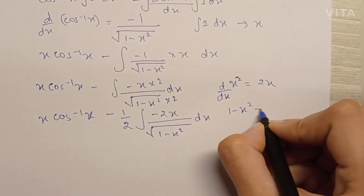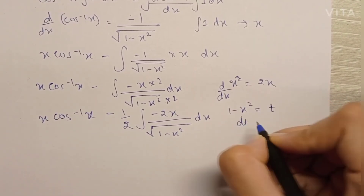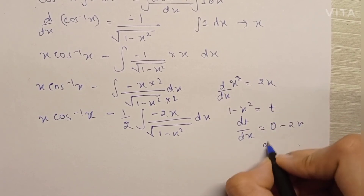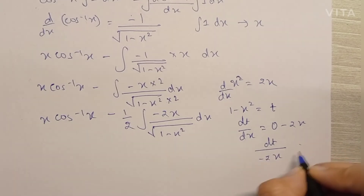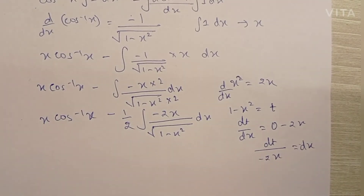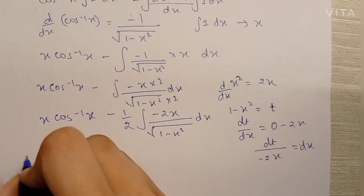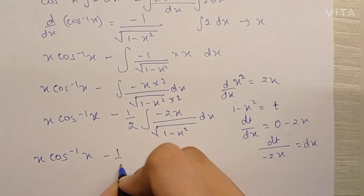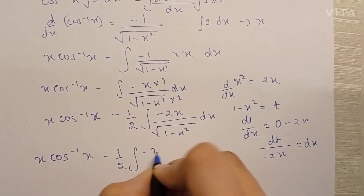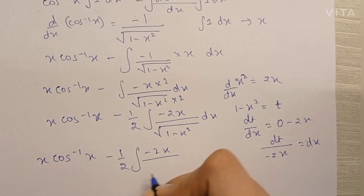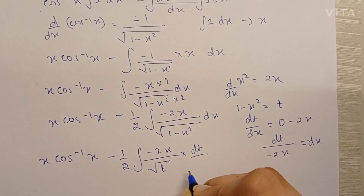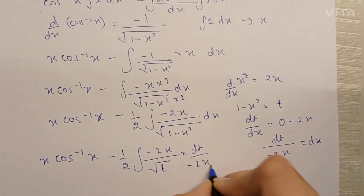Now I can write 1 minus x squared as t. Then dt by dx becomes 0 minus 2x, so dt upon minus 2x becomes dx. Substituting, we have: x cos inverse x minus 1 by 2, times the integral of minus 2x upon root t, into dt upon minus 2x. The minus 2x terms cancel out.